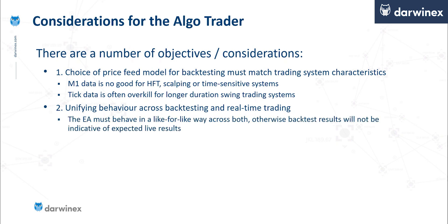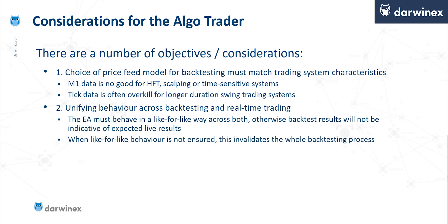The second consideration is unifying behaviour across backtesting and real-time trading. The EA or the algo must behave in a like-for-like way across both of these contexts. Otherwise, the backtest results will not be indicative of the expected live results. When you don't have this like-for-like behaviour, this invalidates the whole backtesting process.